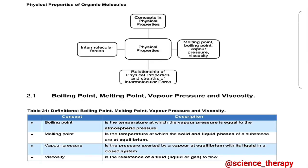Here we have our physical properties, which are your melting point, boiling point, vapor pressure, and viscosity. Now we'll be looking at the intermolecular forces acting in each of the homologous series that we have, and then we'll be looking at the relationship of physical properties and the strength of the intermolecular forces. Now to start off, let's look at the definitions so that we understand the concept and the terminology of the topic.